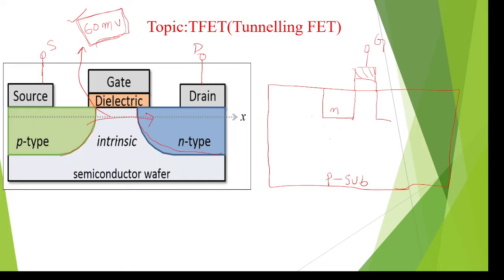Since it is a P-substrate, to design an NPN transistor we diffuse electrons into the substrate using a mask to form source and drain regions. This is the fabrication process of a normal NMOSFET — and as you can see, the diffusion area is not tunnel-shaped.